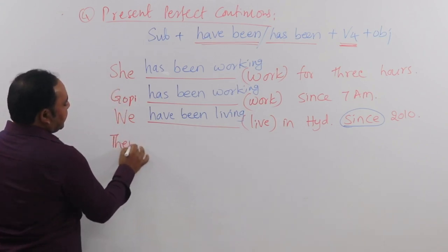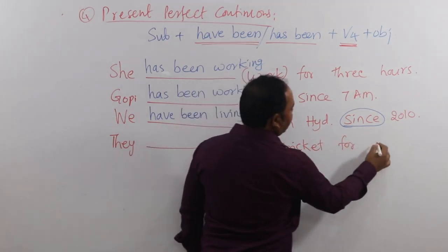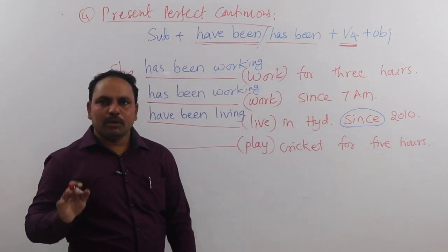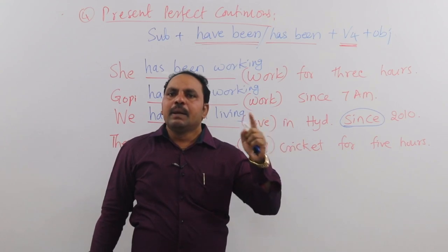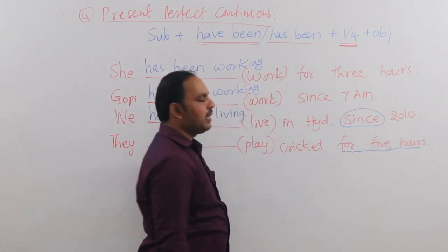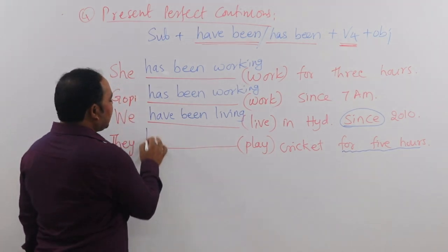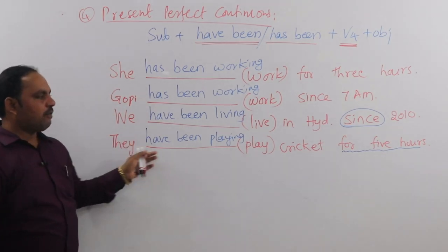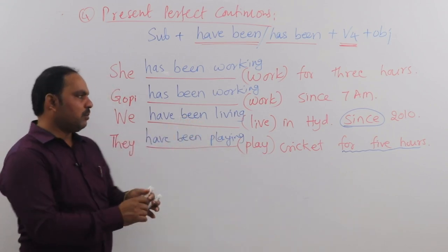One more example: 'They dash play cricket for five hours.' They started playing cricket five hours ago and are still playing. The clue word here is 'for five hours'. So the answer is: 'They have been playing cricket for five hours.'